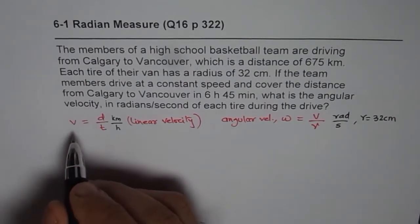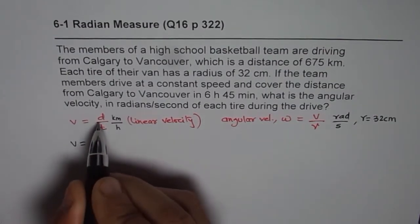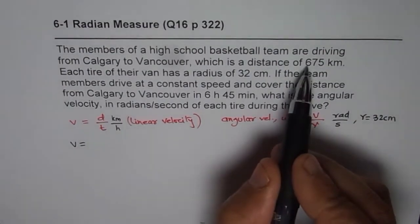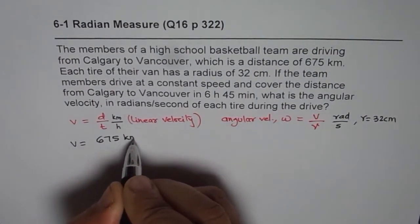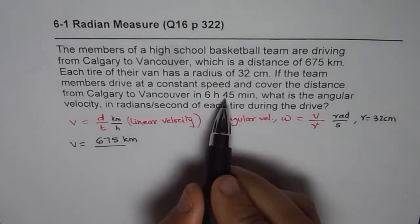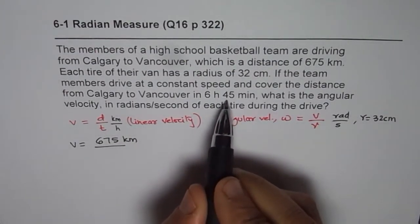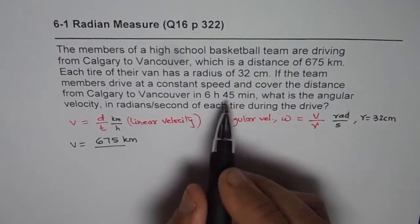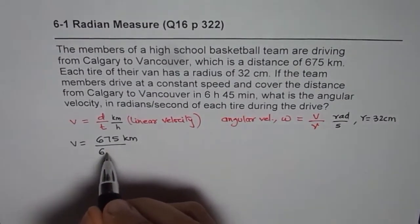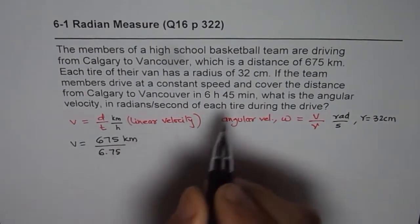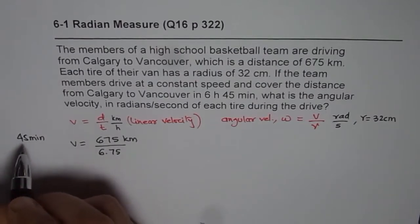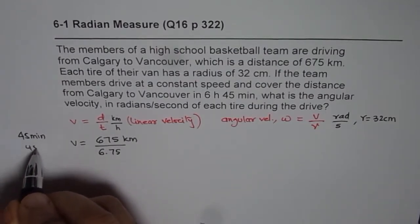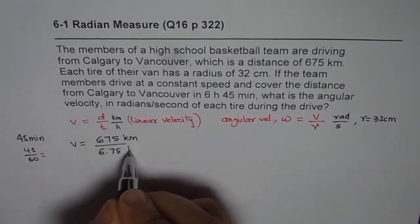Let us begin by finding the velocity. Velocity is distance divided by time. In our case distance is 675 kilometers. Time is 6 hours 45 minutes. Now 45 minutes is 3 quarters of an hour, so I am writing directly 6.75. 45 minutes, to find in hours you have to divide 45 by 60, so you get 0.75. That gives you velocity in kilometers per hour.